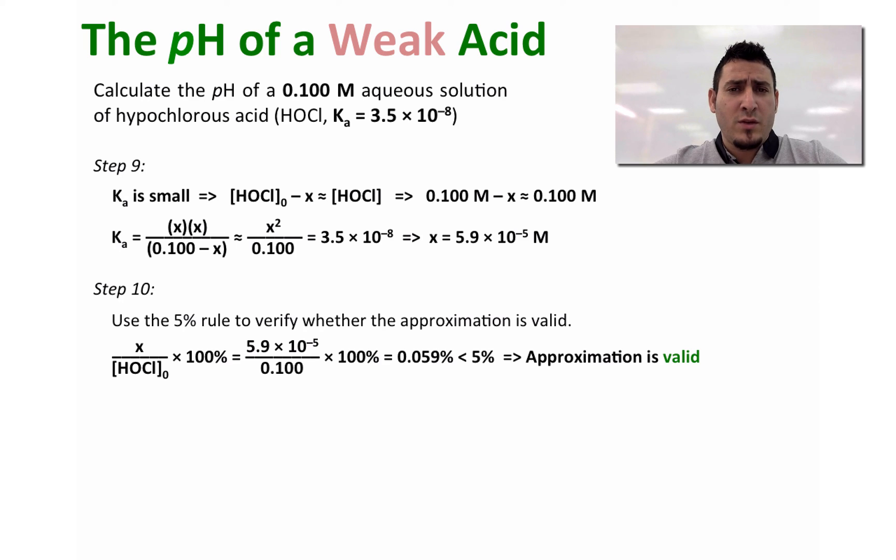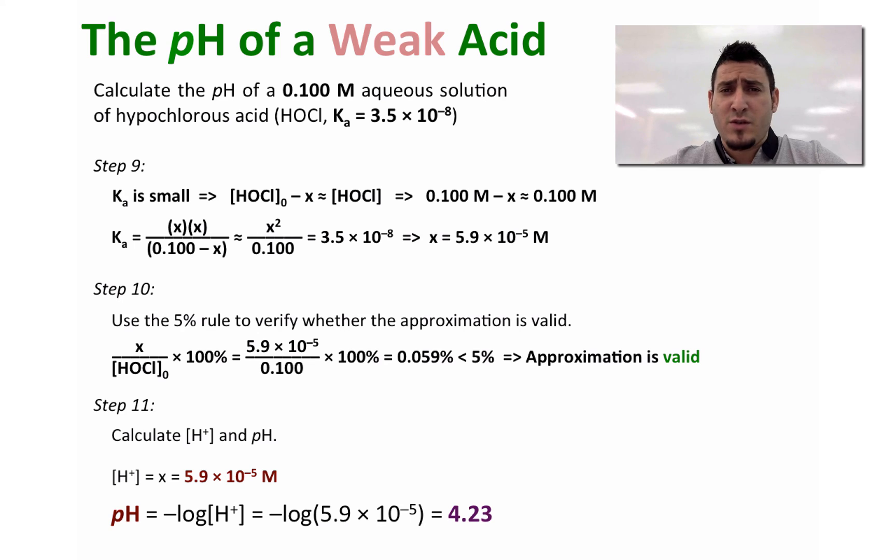So now we can proceed forward in finding the pH. Step 11: We determine the concentration of H+, which is equal to the value of x. That's equal to 5.9 × 10^-5 molar. Now that we have the concentration of H+, we can find the pH using the expression -log[H+], and the pH is equal to 4.23.